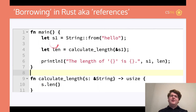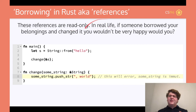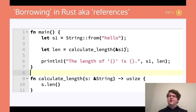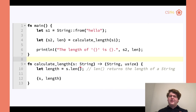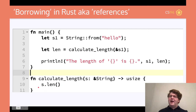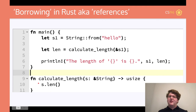What's happening in memory during borrowing: s points to s1, and s1 points to the actual data. When s gets destroyed at the end of the function, Rust knows not to destroy the underlying data — just destroy s and let s1 keep ownership. Ownership never leaves s1; s just points to s1 the entire time.